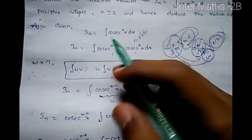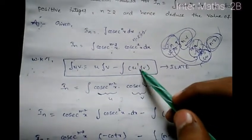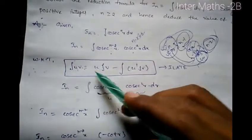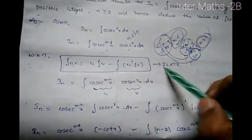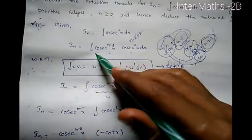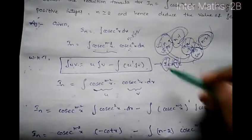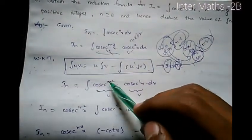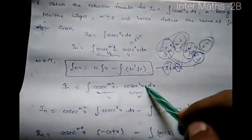We know that integration of uv into dx equals u times integral of v minus integral of u-dash times integral of v — this is the formula. So for ILATE: Inverse trigonometry, Logarithm, Algebra, Trigonometry, Exponential. We take trigonometry as the first function.